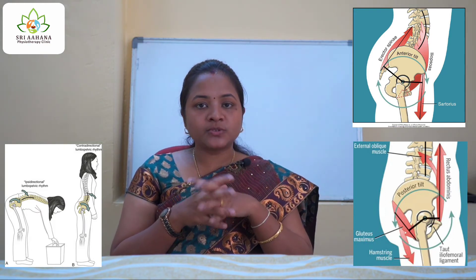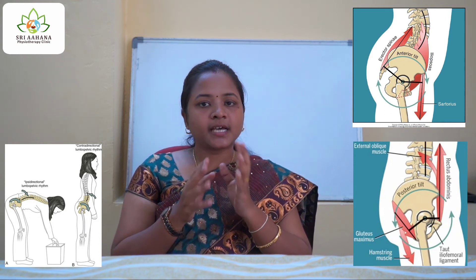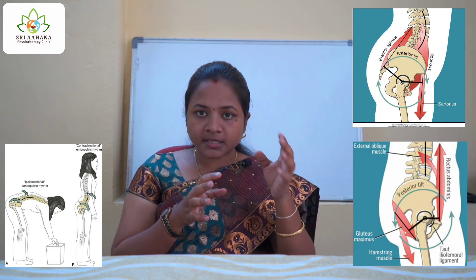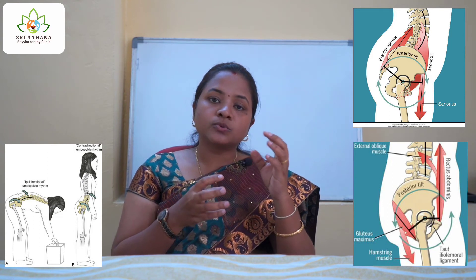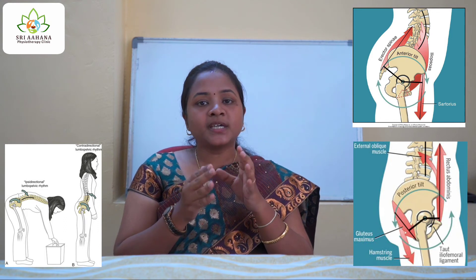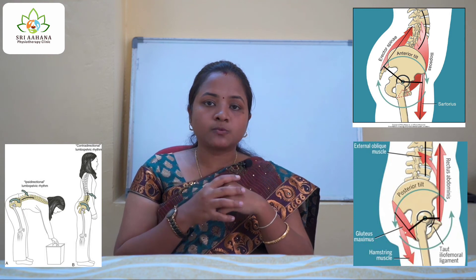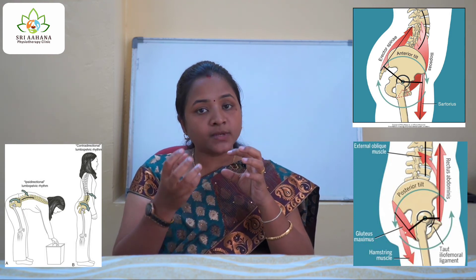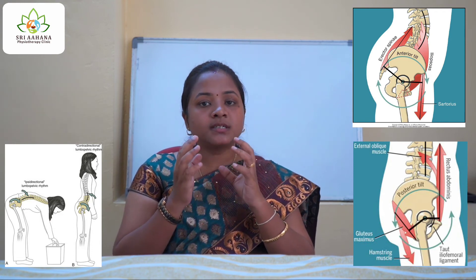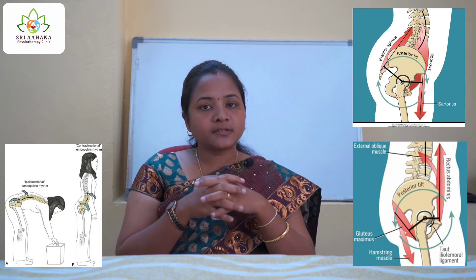Now let me explain the relationship between low back pain and lumbopelvic rhythm. For forward bending, trunk flexion requires eccentric contraction of the spine extensors to control the forward trunk flexion movement. If the extensor muscles — the erector spinae — are weak or fatigued, the body weight itself will be overloaded on the extensor muscle, causing injury, pain, and stress.